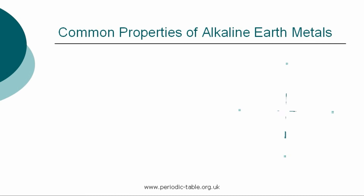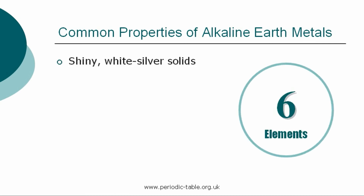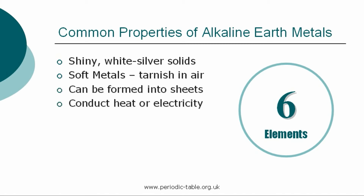The alkaline earth metals are shiny silver-white colored solid metals that are seen to tarnish in air. They are soft metals, although they are harder and denser than the alkali metals. These metals conduct heat or electricity and can be formed into sheets. Elements classified as alkaline earth metals are all found in the Earth's crust, but not in the elemental form.